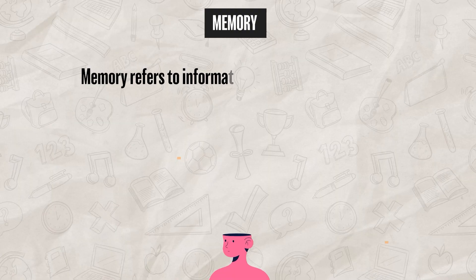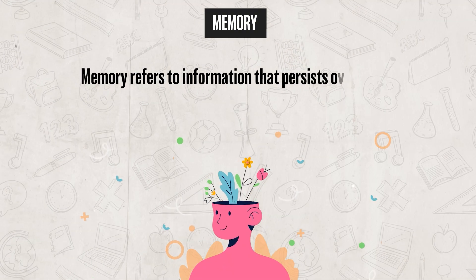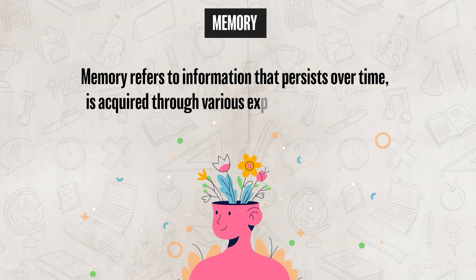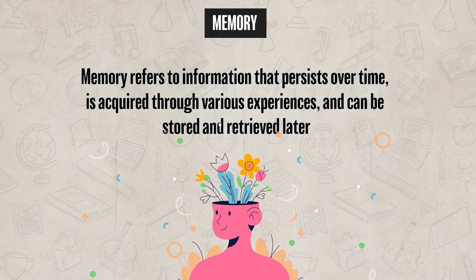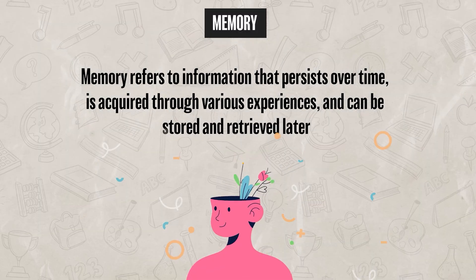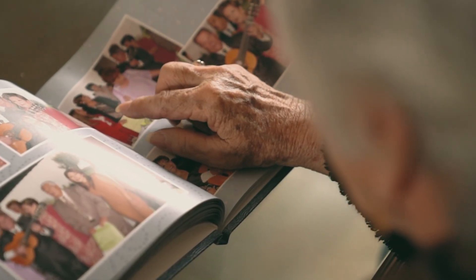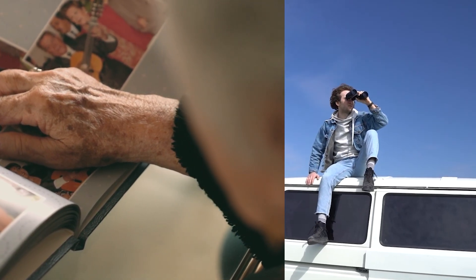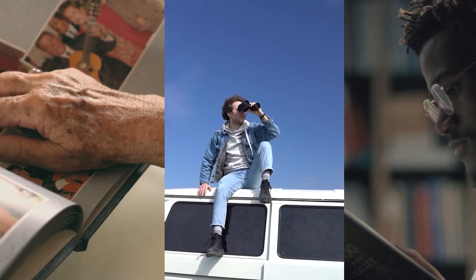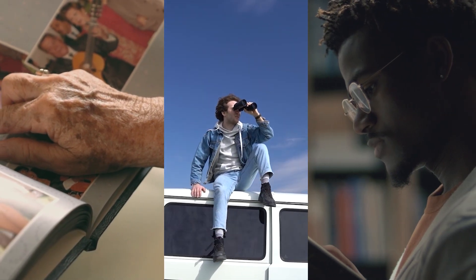Memory refers to the information that persists over time, acquired through various experiences, and can be stored and retrieved later on. When it comes to memory, we have to understand that our memories of past events, experiences, and even our knowledge are not all the same. Memories are different and can be broken down by how they are processed, stored, and retrieved.